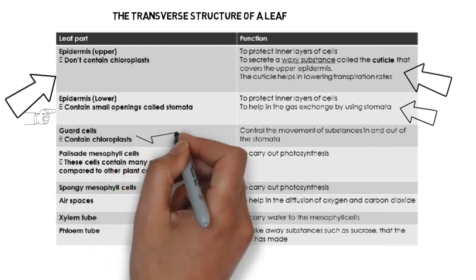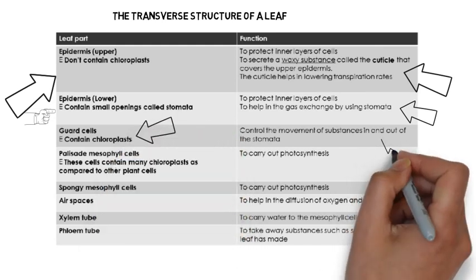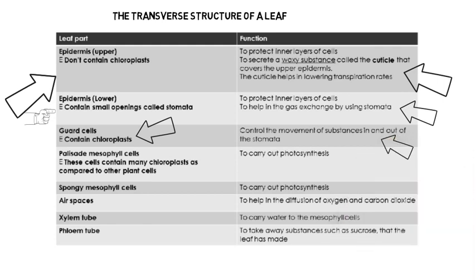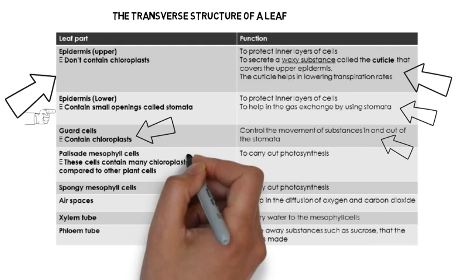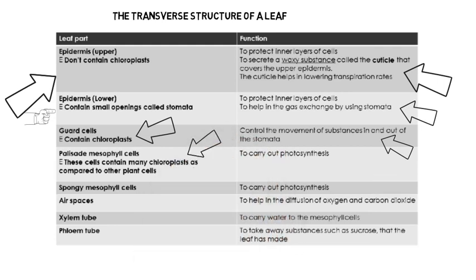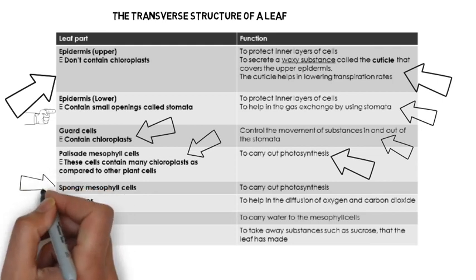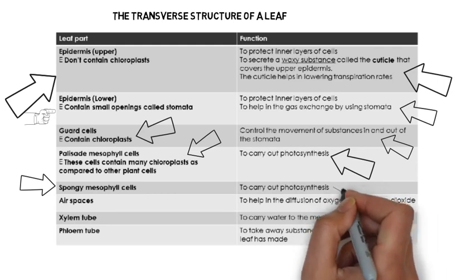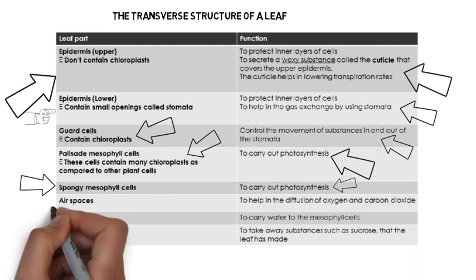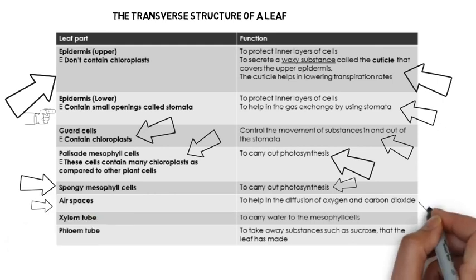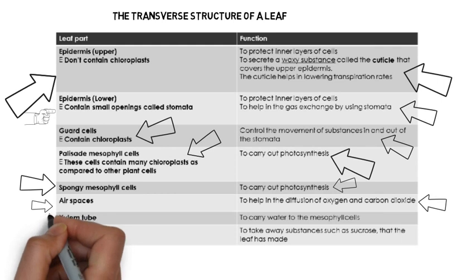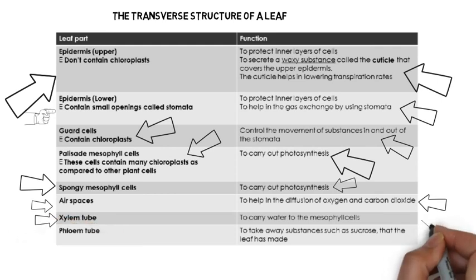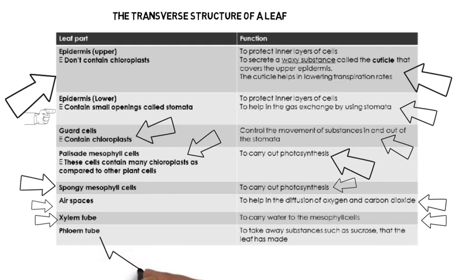Guard cells contain chloroplasts and they control the movement of substances in and out of the stomata. Palisade mesophyll cells contain many chloroplasts compared to other plant cells, so that they can carry out photosynthesis. Spongy mesophyll cells are also used to carry out photosynthesis. Air spaces help in the diffusion of oxygen and carbon dioxide. The xylem tube carries water to the mesophyll cells, and the phloem tube is used to take away substances such as sucrose that the leaf has made.